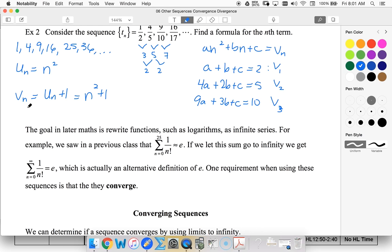So overall, my t sub n is n squared over n squared plus 1.